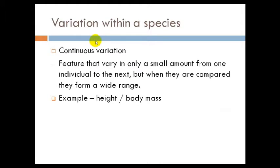For continuous variation, it refers to features that vary by only a small amount from one individual to the next, but when they are compiled, they form a wide range. Examples of continuous variation are height and body mass.